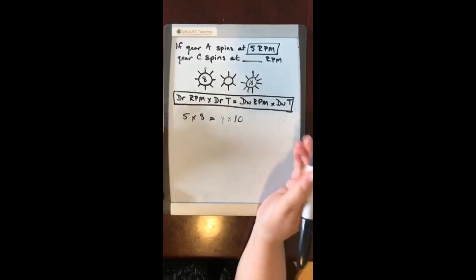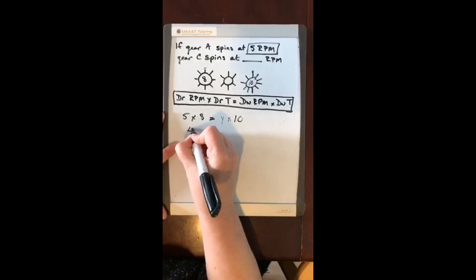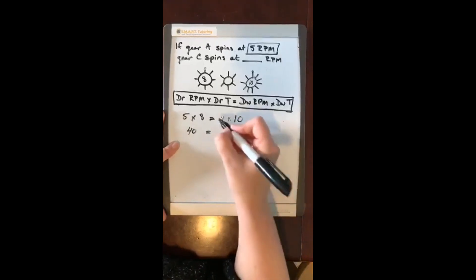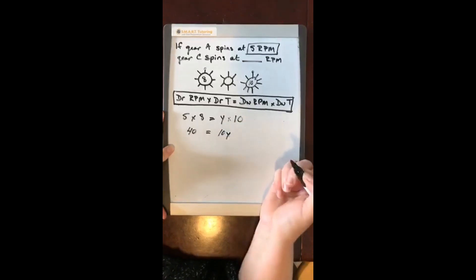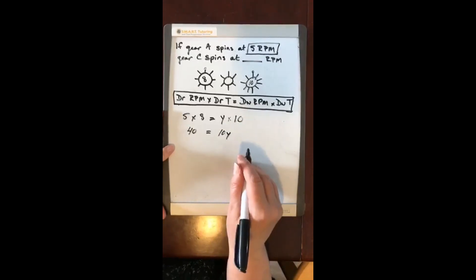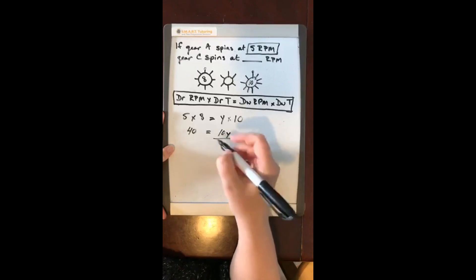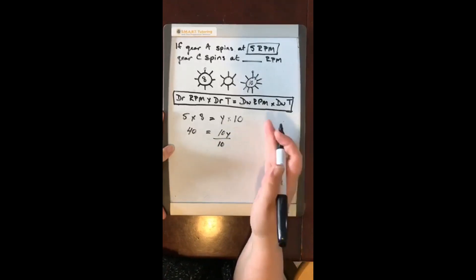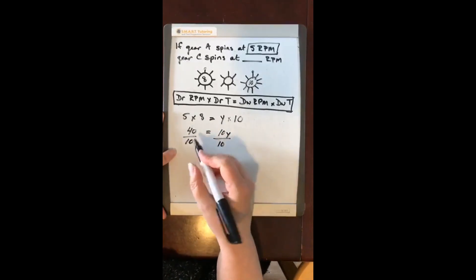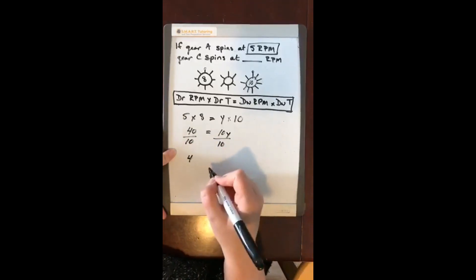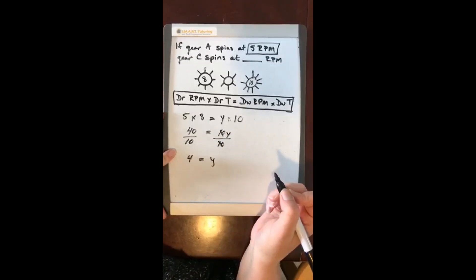Now for algebra, you're going to do what you know first and that is the multiplication. 5 times 8 is 40, and when you're multiplying a number and a variable together you're just putting it together, so we can call that 10y. The whole idea behind algebra is to isolate the variable. To do that we're going to divide it by the number it was multiplied by, which is 10. What we do on one side of the equation we have to do on the other side. So 40 divided by 10 is 4, and this 10 and this 10 cancels each other out, therefore y equals 4.